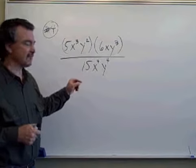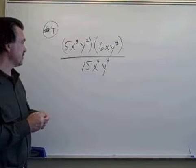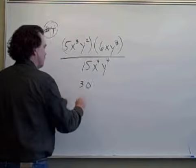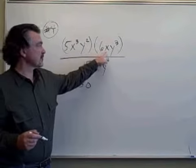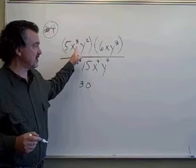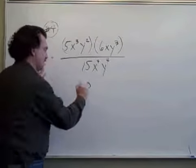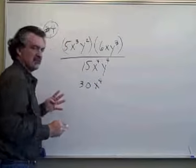Let's do the multiplications first. So we first multiply the coefficients. Five times six is thirty. X to the third times x, there are three x's here, an additional x there being multiplied. That's a total of four x's being multiplied. That's x to the fourth.